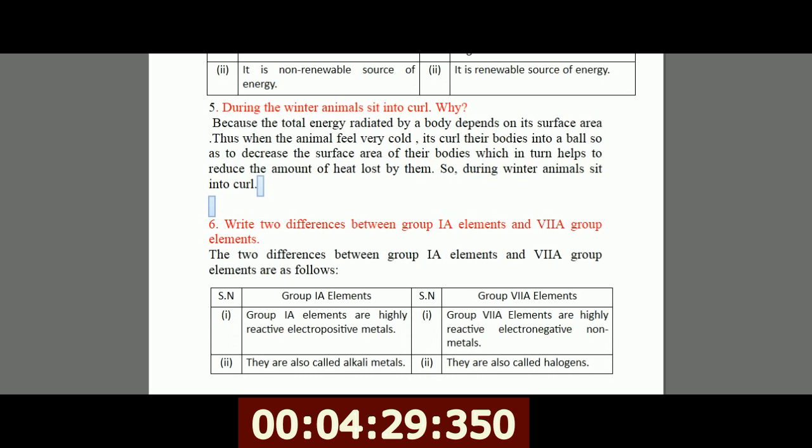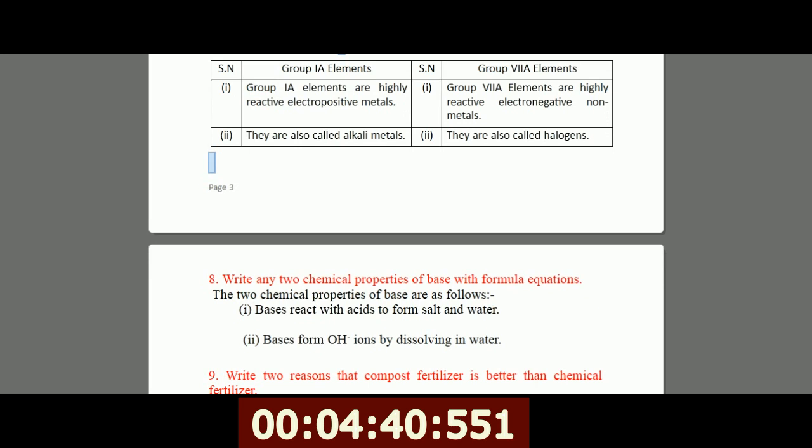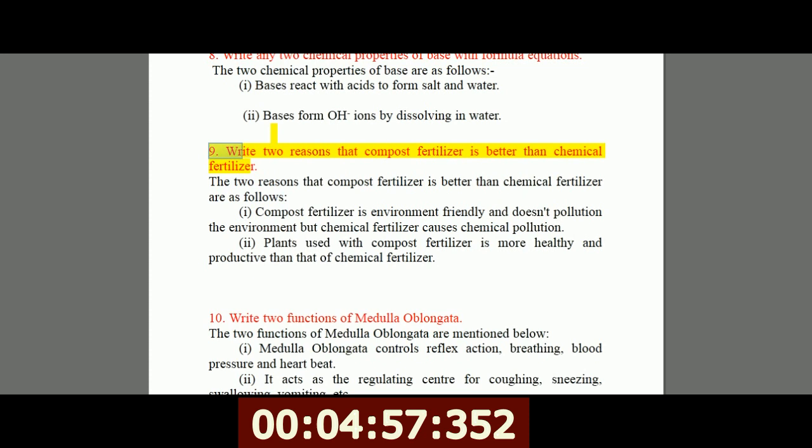6. Write two differences between group IA element and group VIA element. 8. Write any two chemical properties of base with formula equations. The two chemical properties of base are as follows. I, bases react with acids to form salt and water. II, bases form OH- ions by dissolving in water.